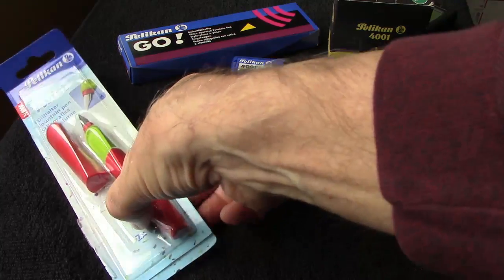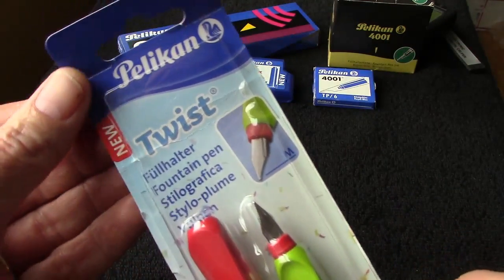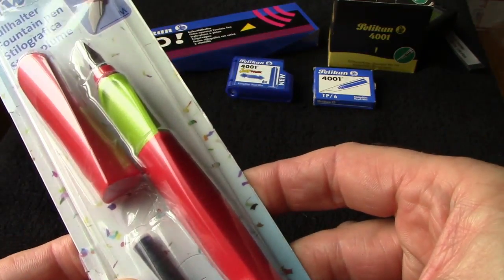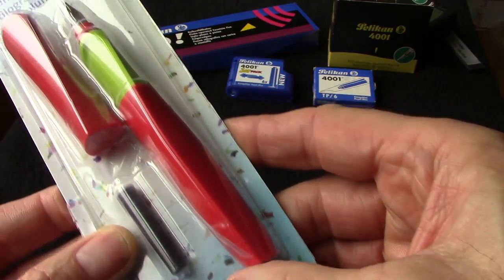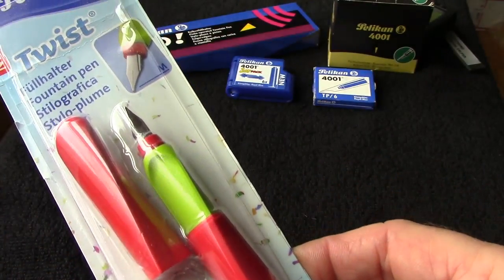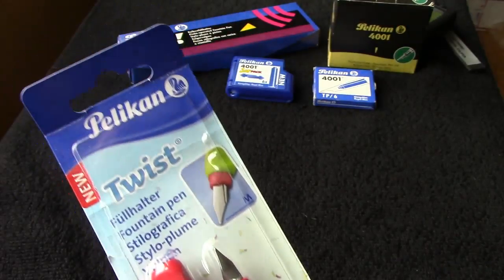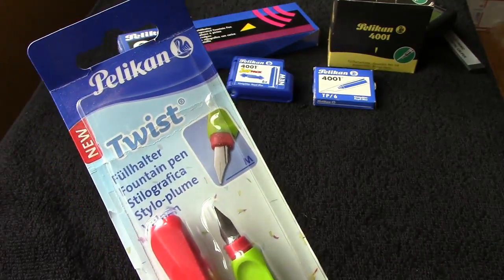So the pen is the Pelican Twist. I got it in the red and apple green. It comes in many different colors. This one was from eBay, but as I said you can get them on Amazon, JetPens and other places.